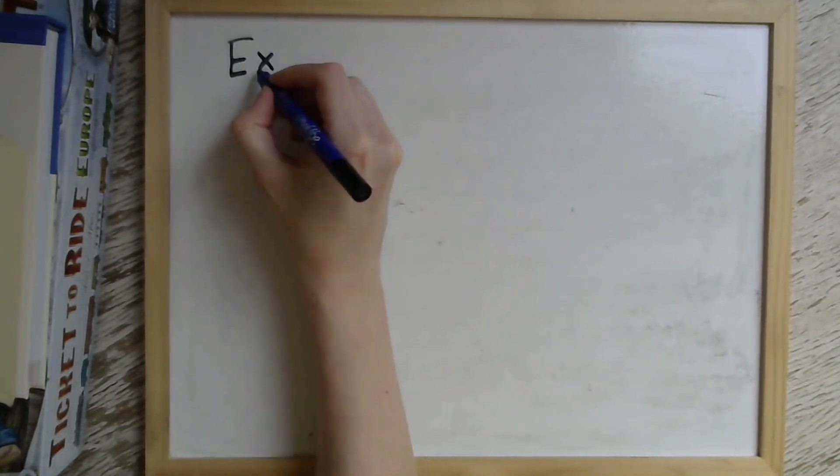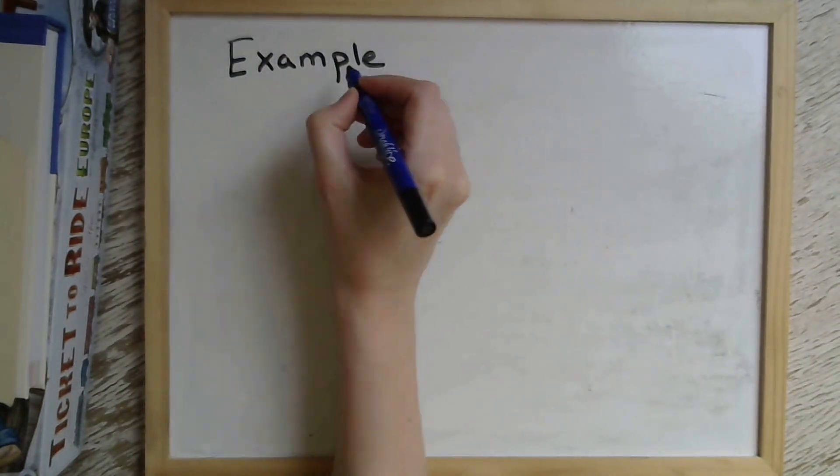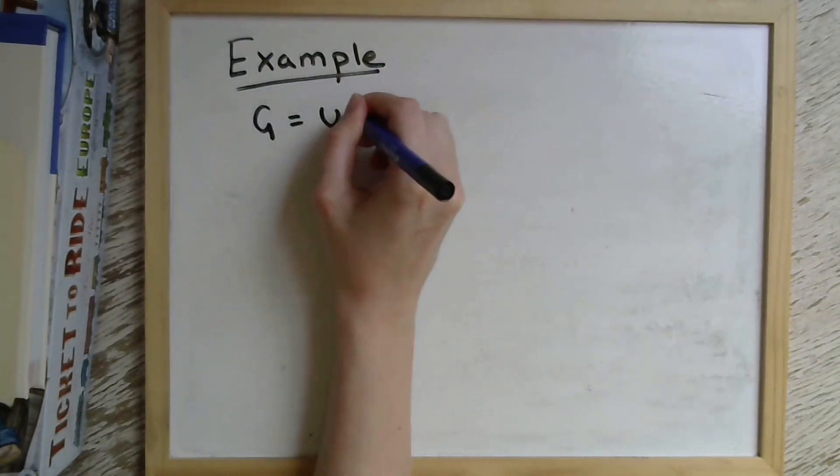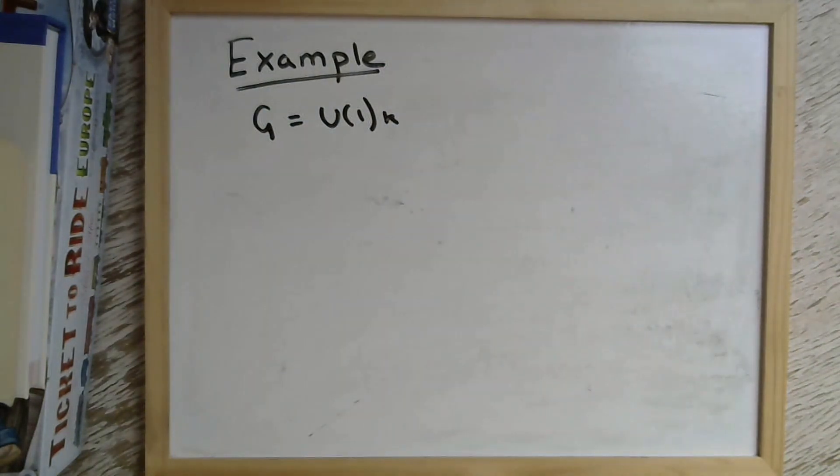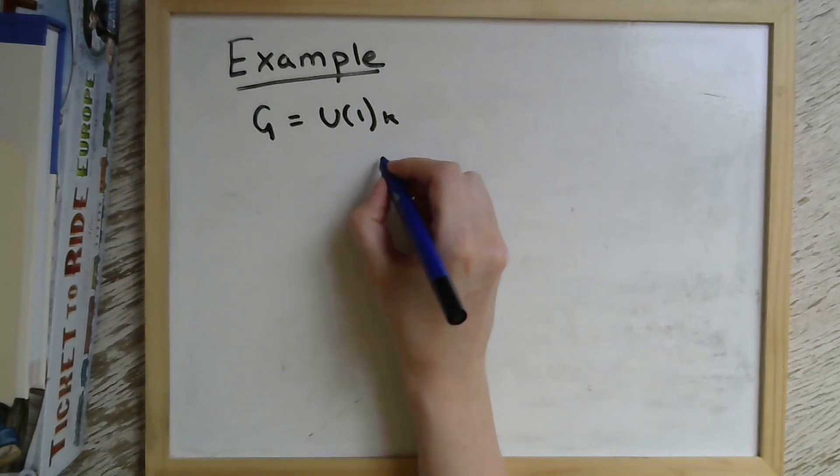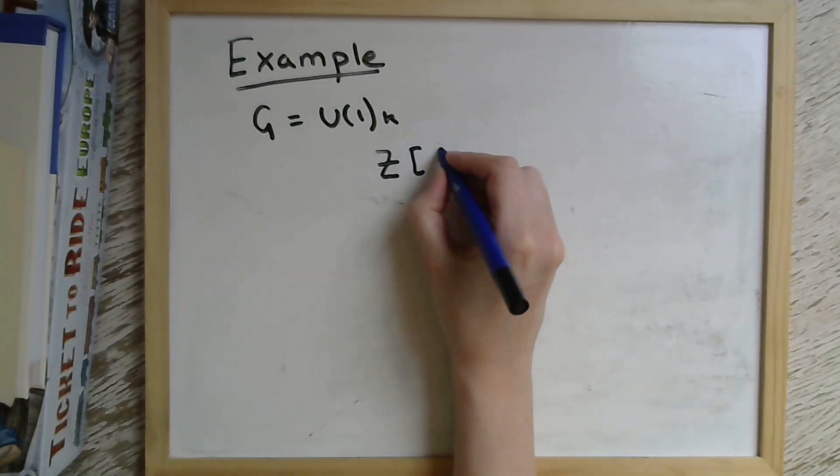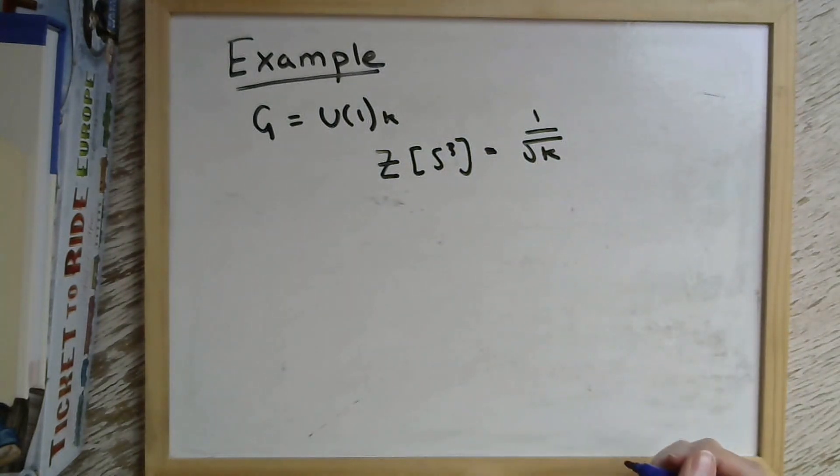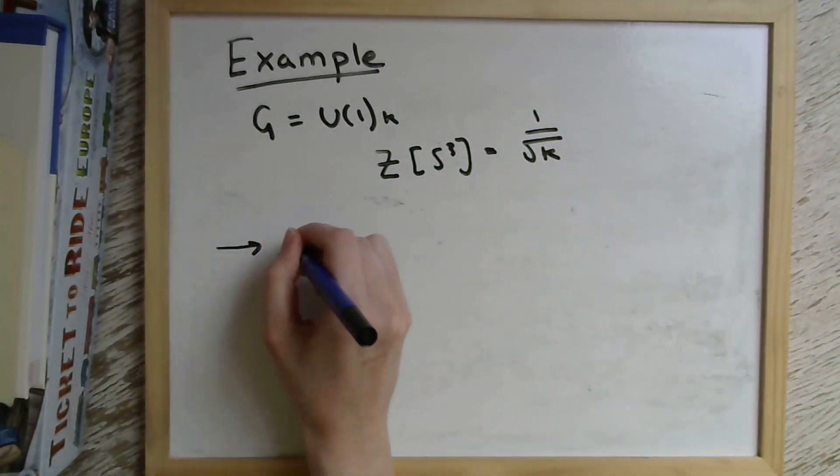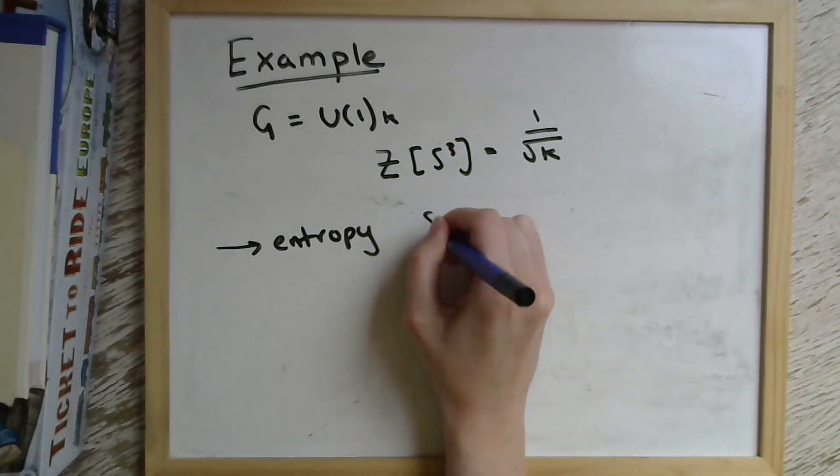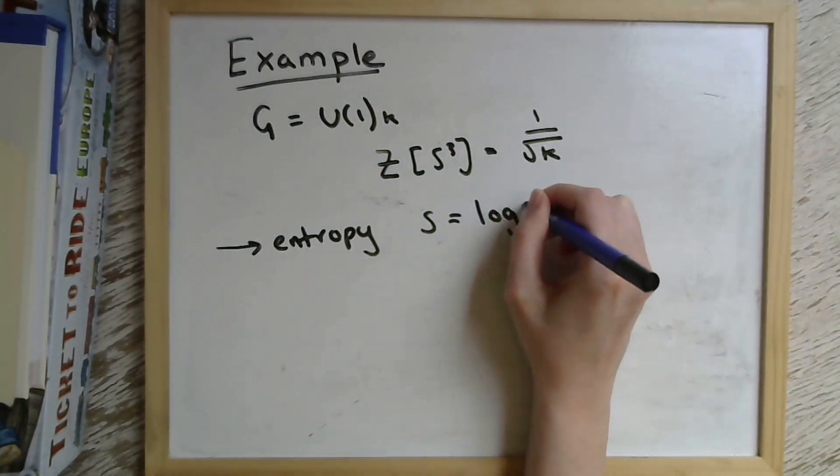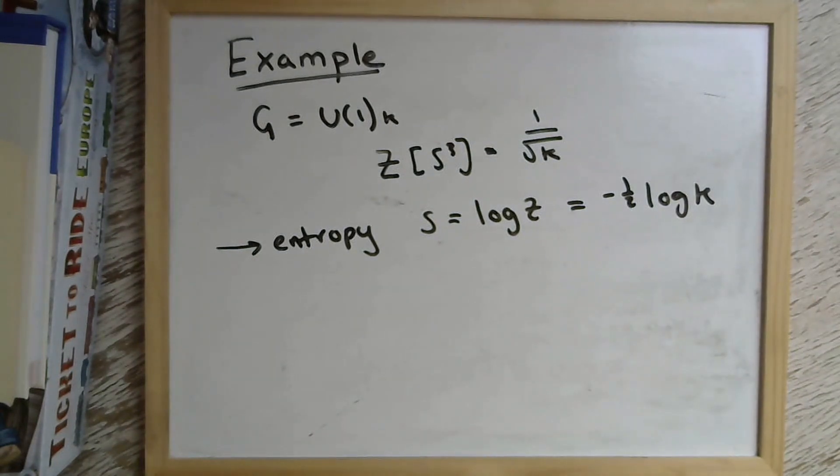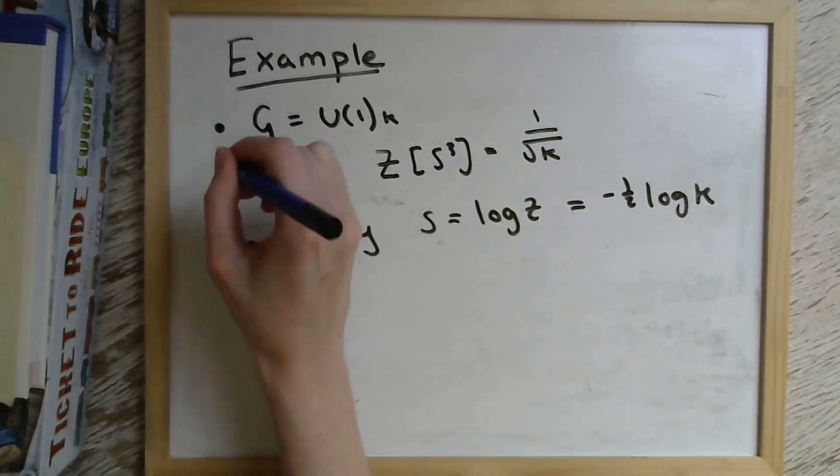So let's first just look at a very simple example where the gauge group is just U(1) at coupling constant K. So we're just looking at a very simple abelian theory. And Witten tells us that the partition function over the three sphere takes this form of one over √K. From this, we can immediately calculate the entropy by taking the log of this partition function, which looks like this. So that's the calculation on the three sphere done.